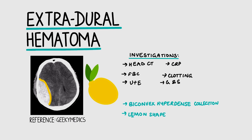Apart from a head CT, it is important to complete some initial investigations. This includes FBC and U&Es, which are used for the baseline bloods as well as to understand the extent of the bleed. CRP can help us to identify any ongoing infections that might present in this way. Clotting is also used to identify any blood clotting disorders within the patient. Group and save is required later on because blood may be required should there be greater blood loss than expected, especially because these patients need surgery.